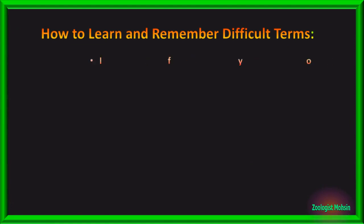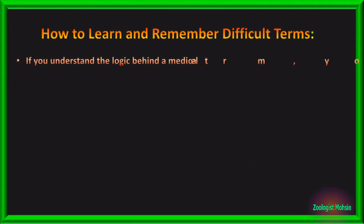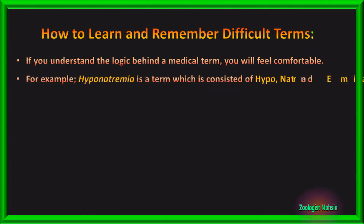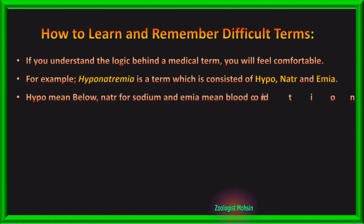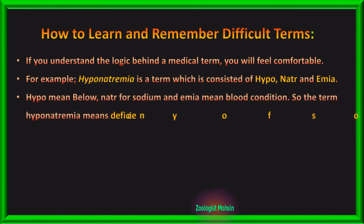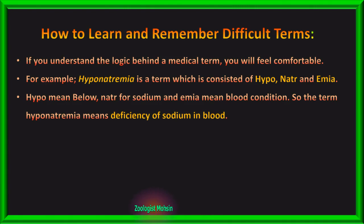How to learn and remember difficult terms? If you understand the logic behind a medical term, you will feel comfortable in remembering, learning, and understanding it forever. For example, the term hyponatremia seems very difficult, but if you split it into its basic parts — hypo, natur, and emia — in Latin, hypo means below, natur is the Latin name for sodium (natrium), and emia means blood condition. So hyponatremia means deficiency of sodium in blood.